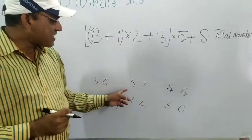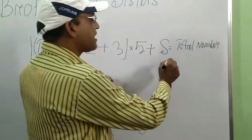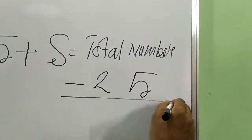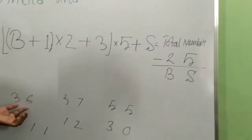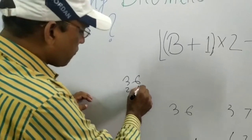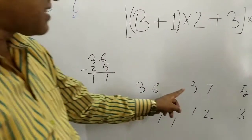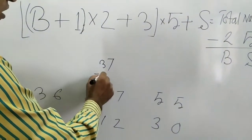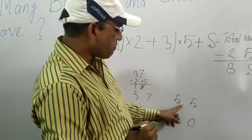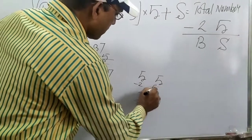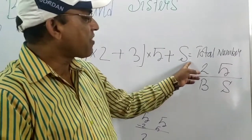Now how does the result work? This is the main magic. When you apply this formula, you can't say the magic. The magic is minus 25 — total number minus 25. The left-hand side (tens place) is brothers, the right-hand side (units place) is sisters. So if 36 is our result: 36 minus 25 gives 11 — 1 brother, 1 sister. If 37: 37 minus 25 is 12 — 1 brother, 2 sisters. If 55: 55 minus 25 is 30 — 3 brothers, 0 sisters.